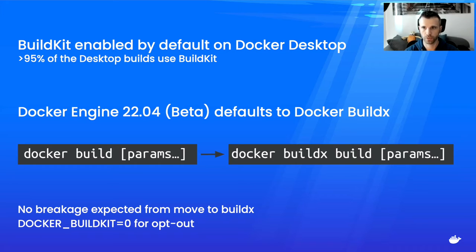You can always use the latest features by default with no expected breakage compared to the previous BuildKit opt-in. There is still an opt-out available with DOCKER_BUILDKIT=0 for cases like Windows containers. The old builder implementation is deprecated and may be removed in a future release.